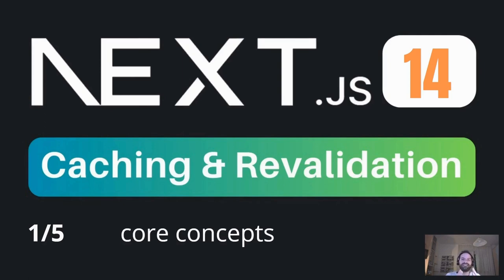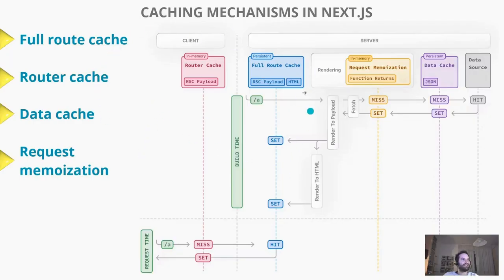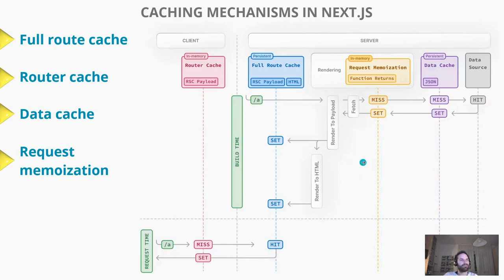The first concept you have to know is that data can be cached on the client — and it's just for a session — and data can be persistently cached on the server, depending on the specific needs. Here is a high-level overview of the different caching mechanisms and their purpose. This diagram, if you've already looked at the Next.js official documentation, is really well organized and explains all the caching mechanisms really well.